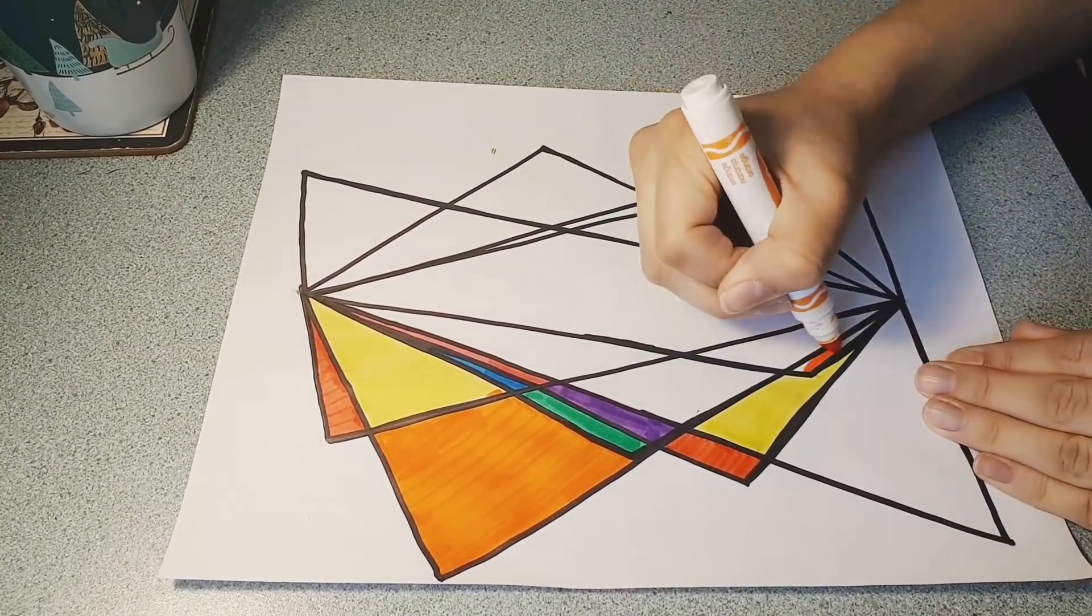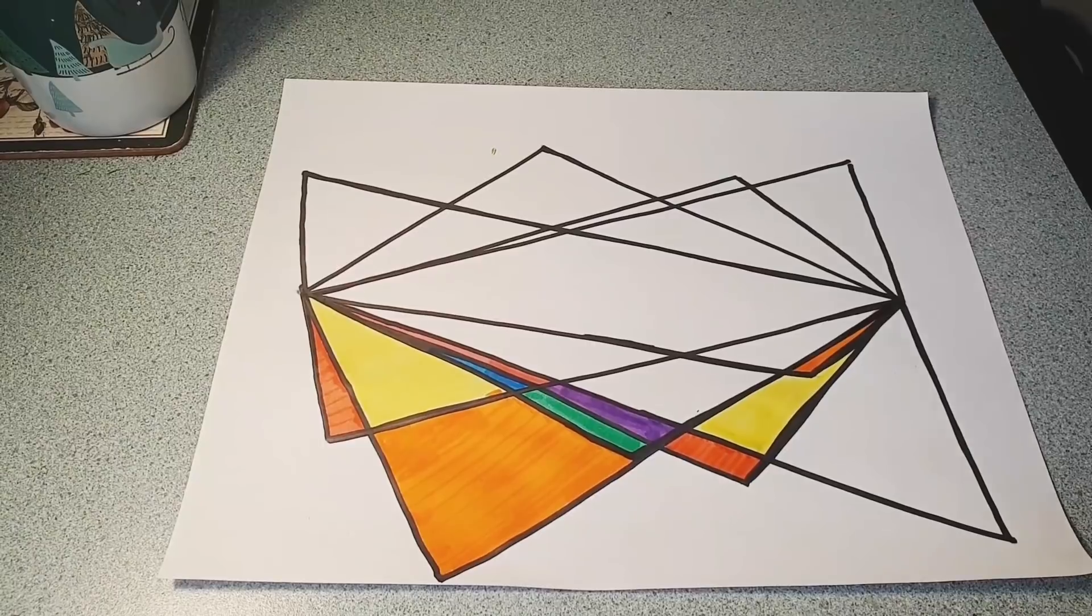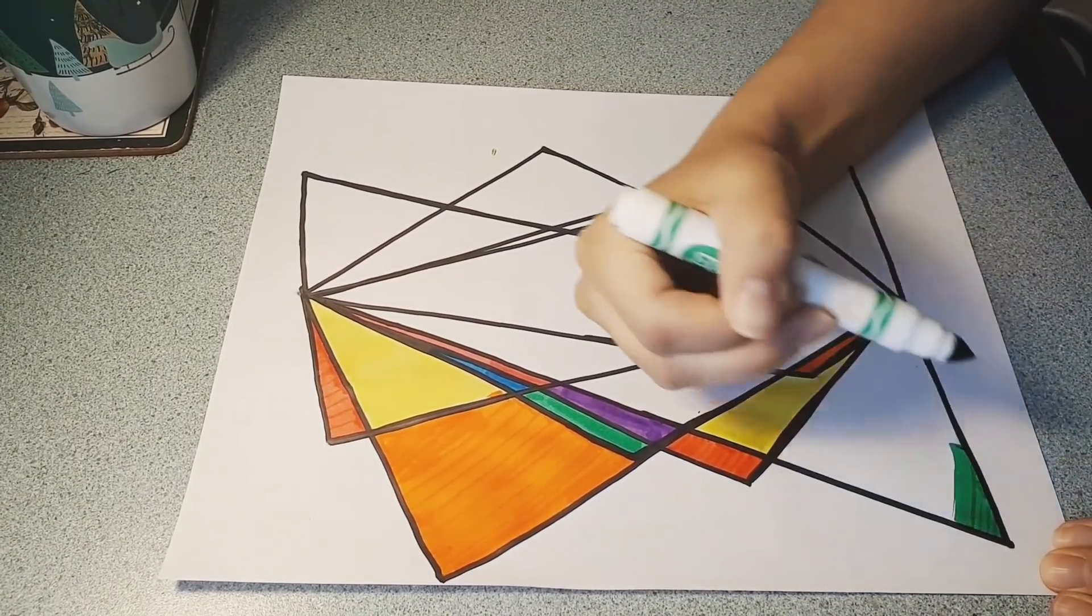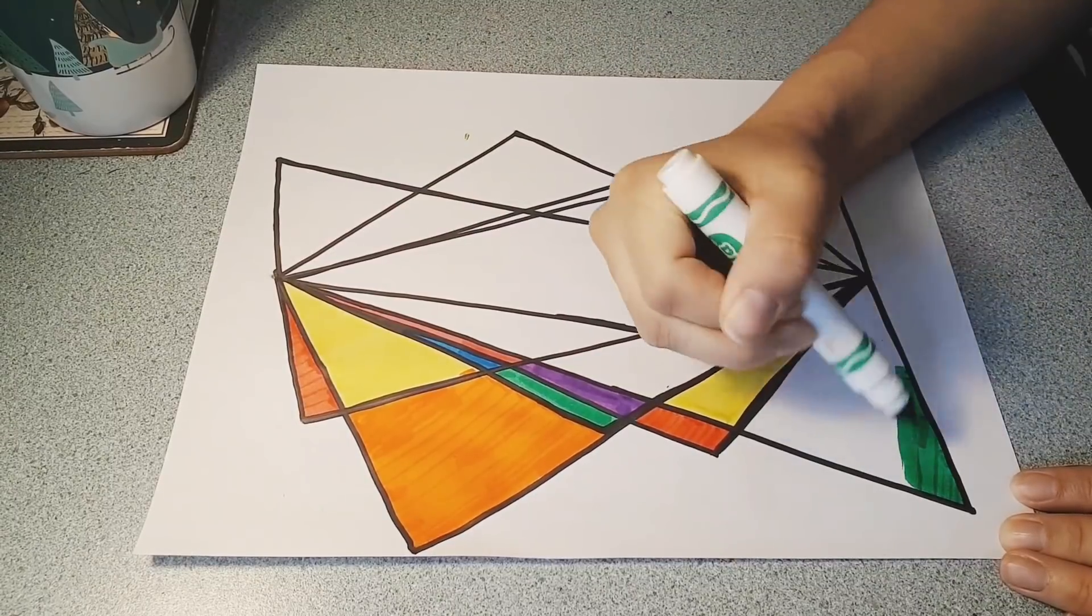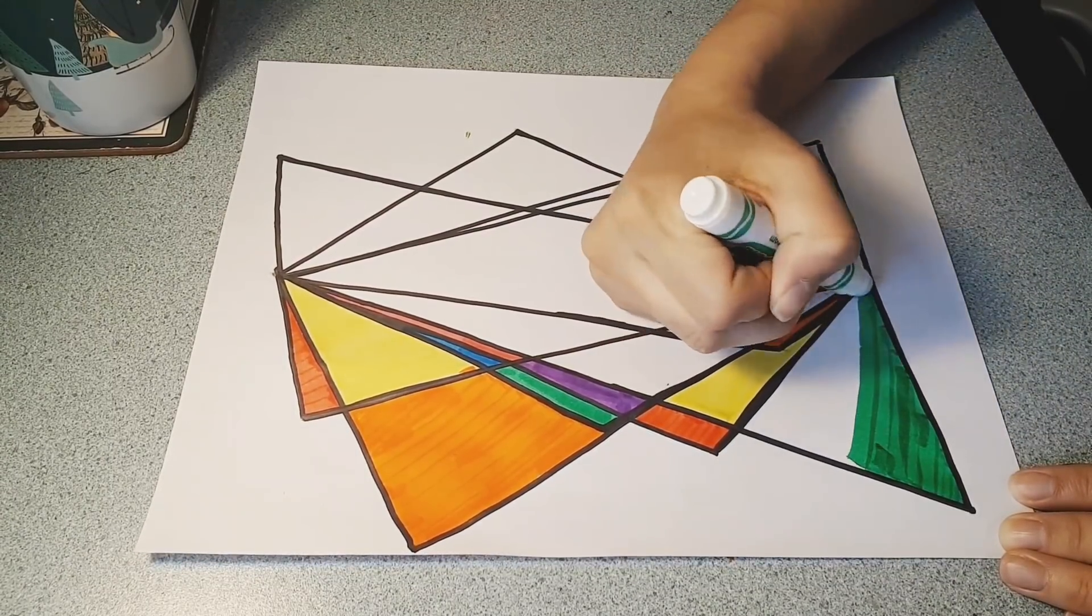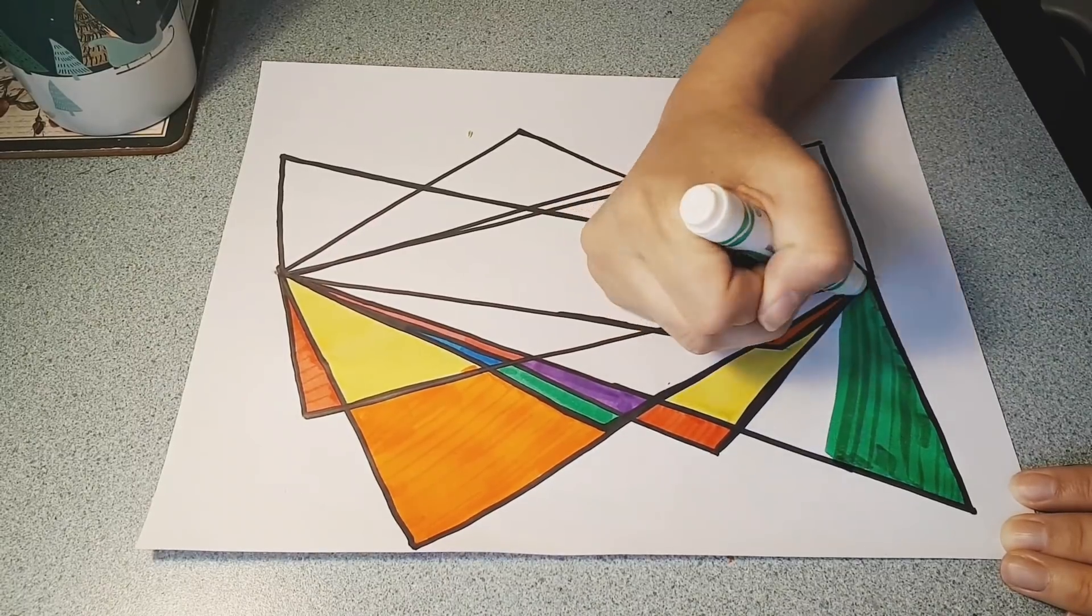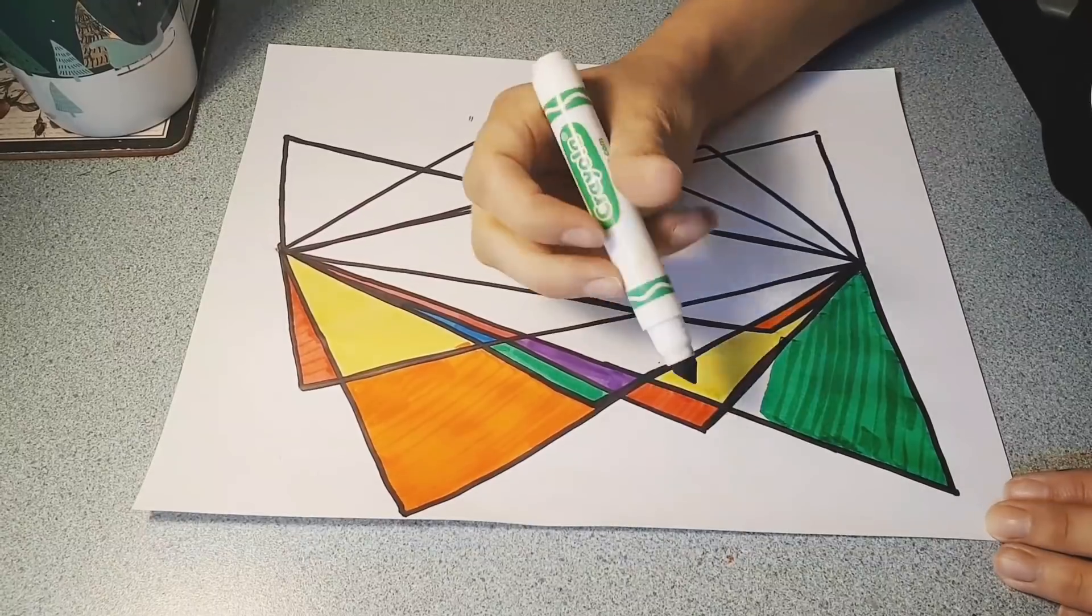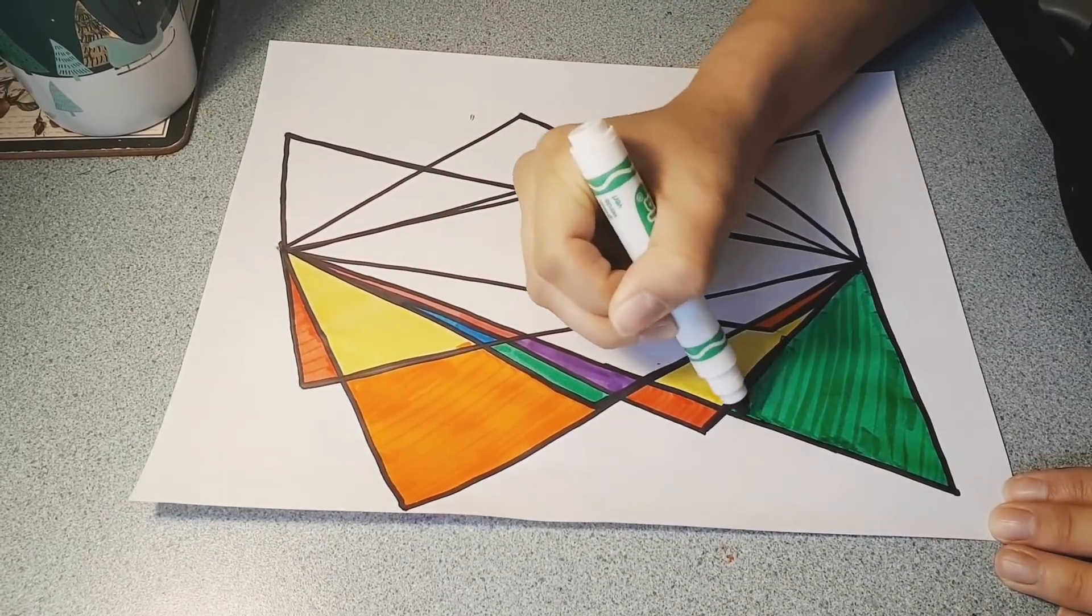One tip for coloring is to move your marker in the same direction every time. You can see that I start at the bottom and then move my marker up. I don't go back and forth. I want these smooth lines, so I go up and up and up.